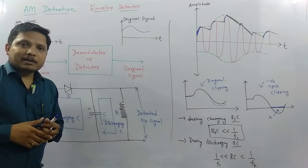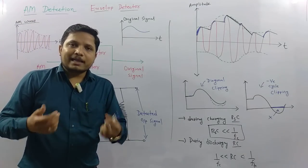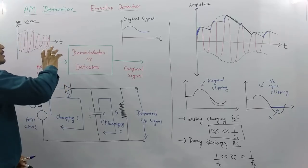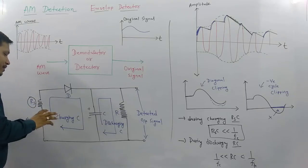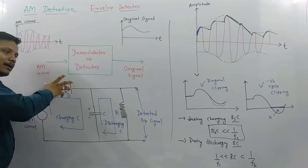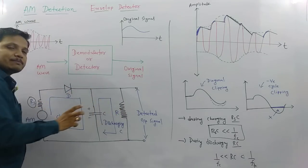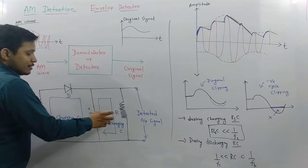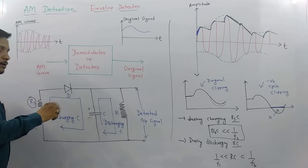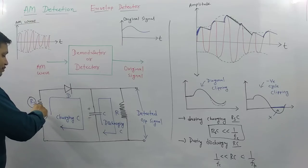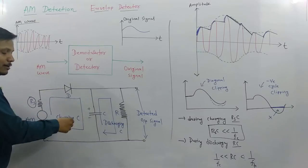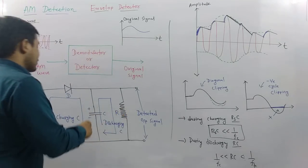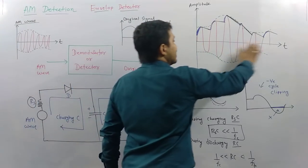Let us have a quick revision of this topic. The envelope detector demodulates the AM signal to recover the original information. It has two parts: a rectifier (the diode) and a low-pass filter (the RC circuit). There are three key components: RS, capacitor C, and resistor R. The capacitor charges via RS and the diode, and discharges via the RC path. The diode clips the negative part of the AM signal because of rectification.